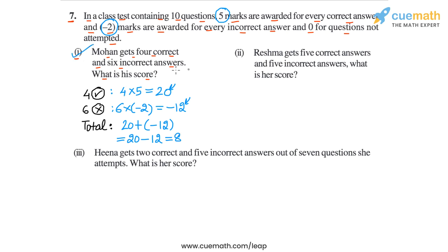In part 2, the problem statement says Reshma gets 5 correct answers and 5 incorrect answers. What is her score? So for Reshma's 5 correct answers, her score will be 5 into 5 marks per correct answer, so 5 into 5, or 25.